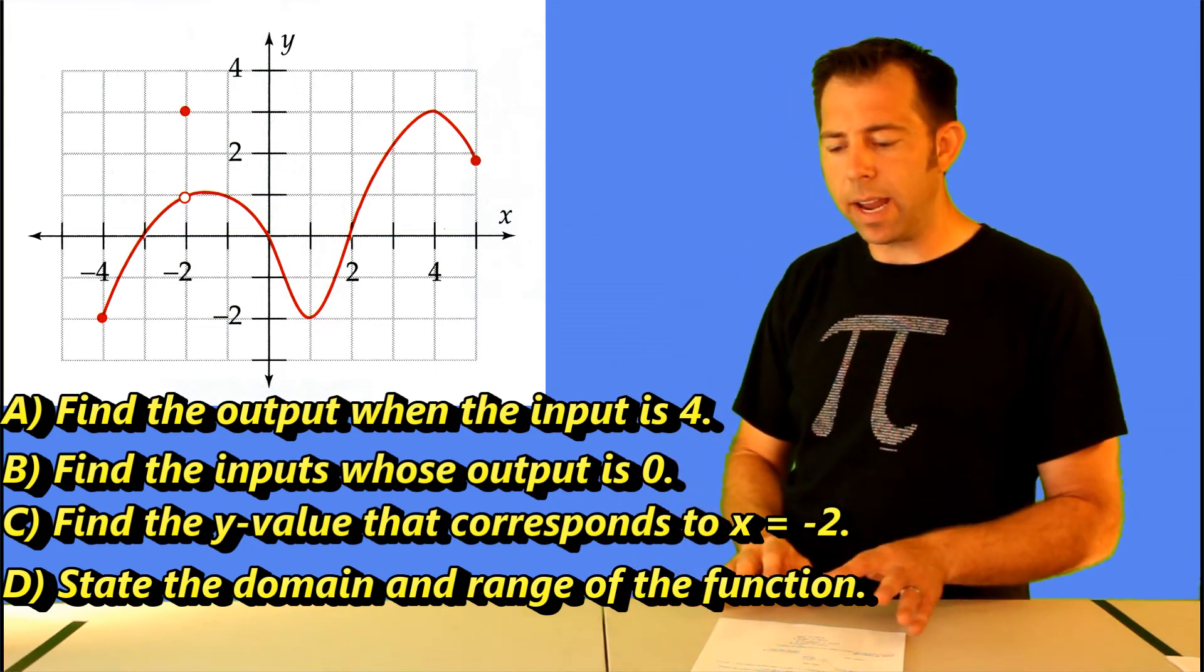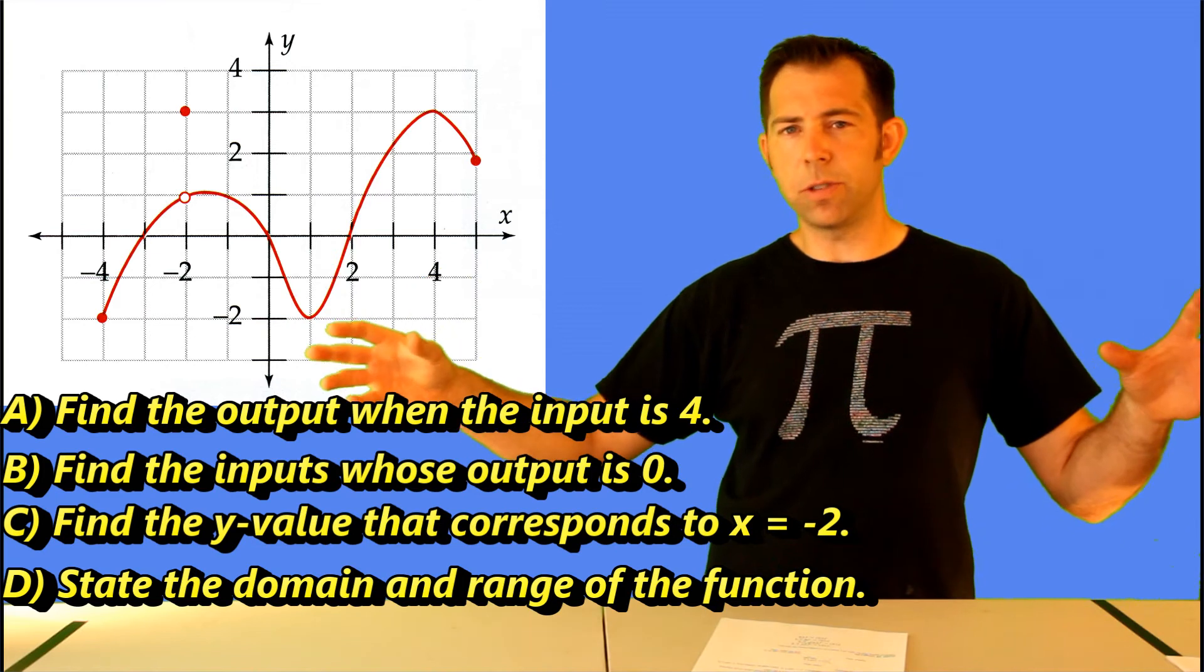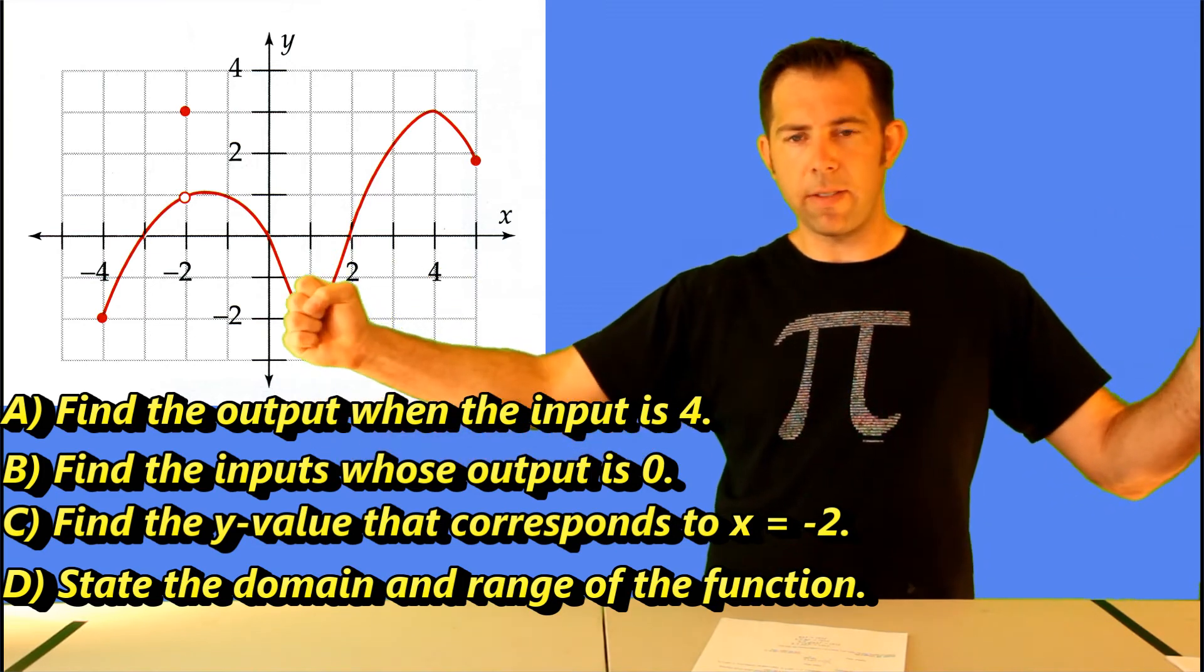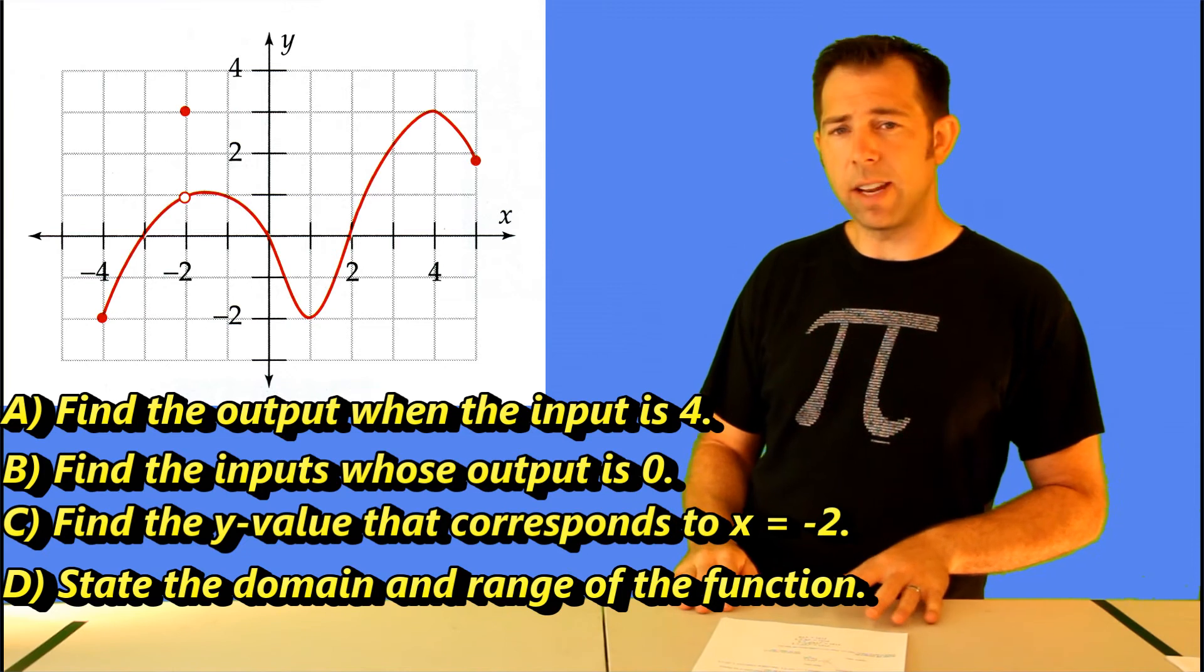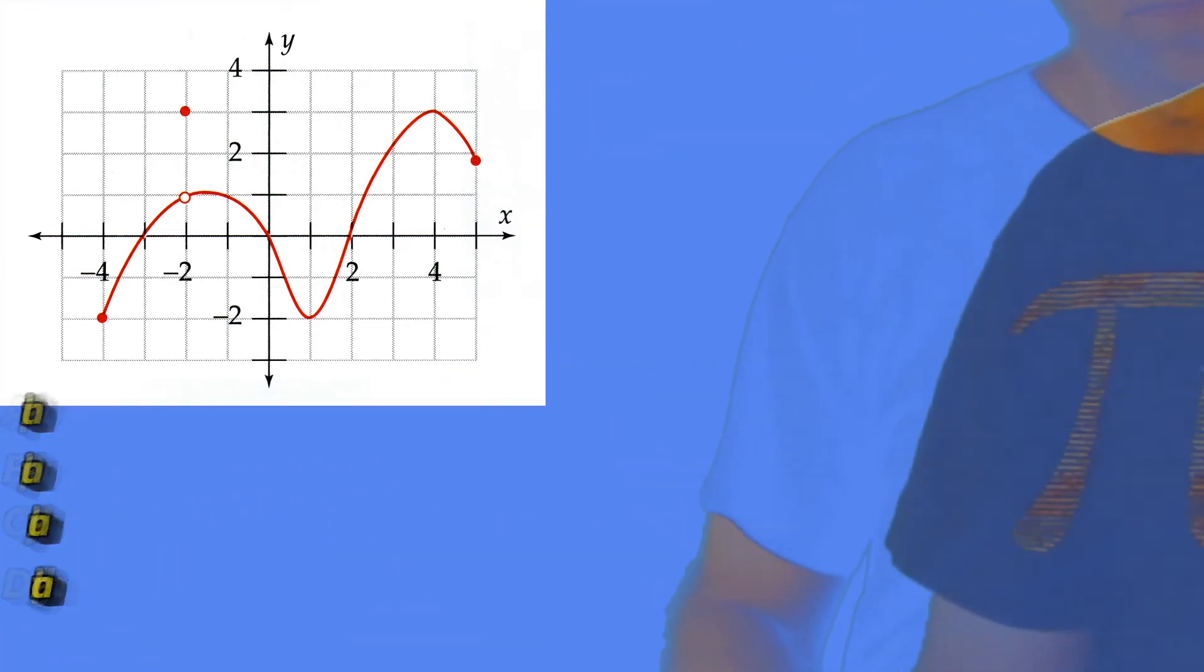And then the domain and the range. Well, the domain is simply all the real numbers between negative four and five inclusive. That means we're including negative four and five at the end. And the range is all real numbers between negative two and three inclusive. So everything from negative two up to three.